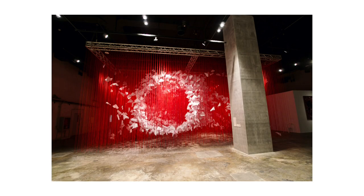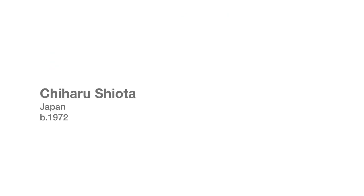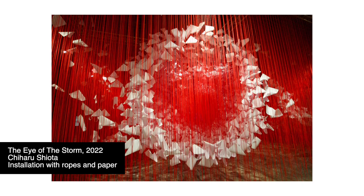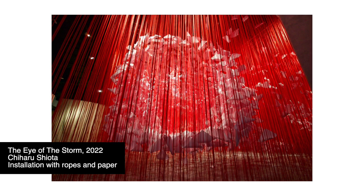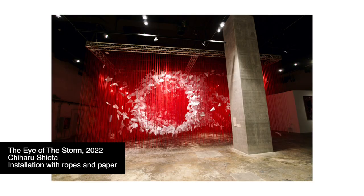The next piece is this installation by Japanese artist Chiharu Shiota, named The Eye of the Storm, made with thousands of sheets of paper connected with red ropes, creating the form of a typhoon. A typhoon is a destructive thing but has a calm, still area at its center. This piece gives the idea of how Chaos and Calm could be right next to each other, just like the way that the typhoon and its eye could exist together.